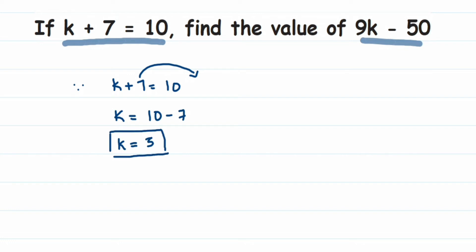Now this value we're going to substitute in the other equation, which is 9k minus 50. Substitute k equals 3 into 9k minus 50.